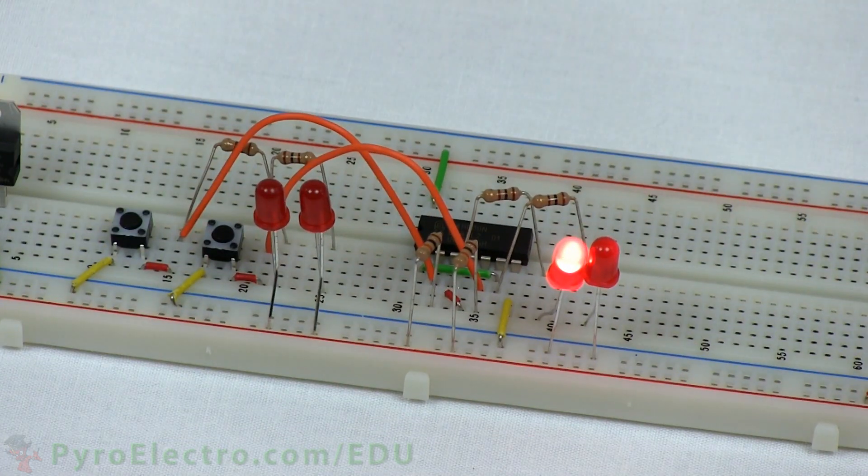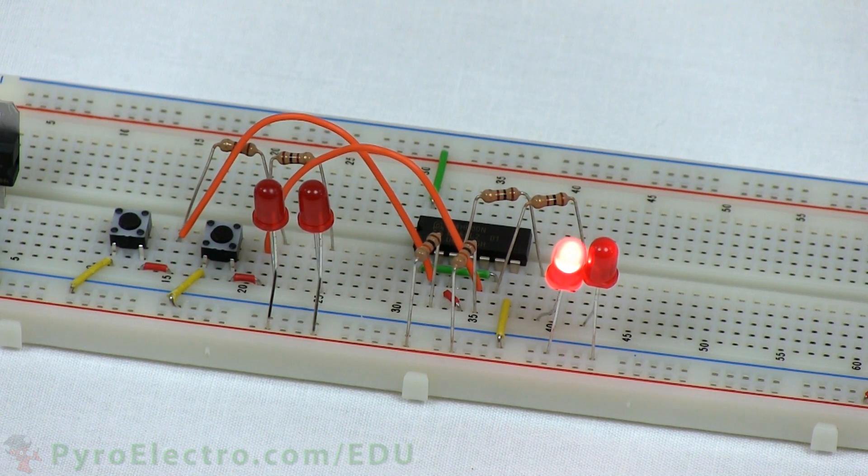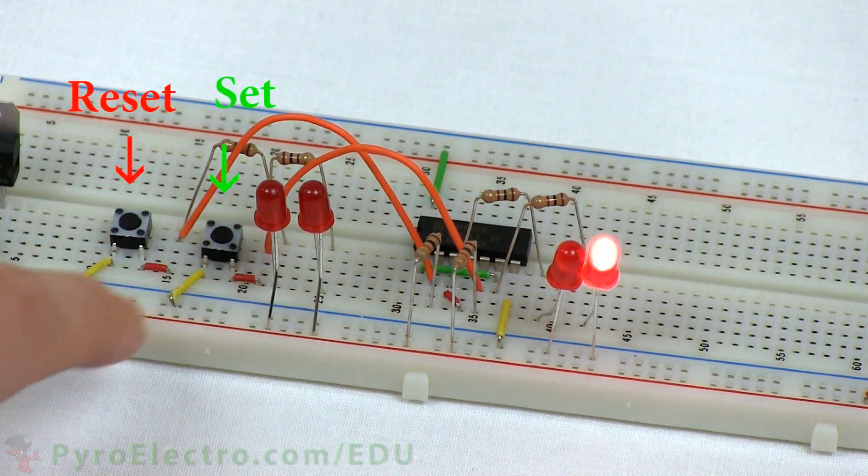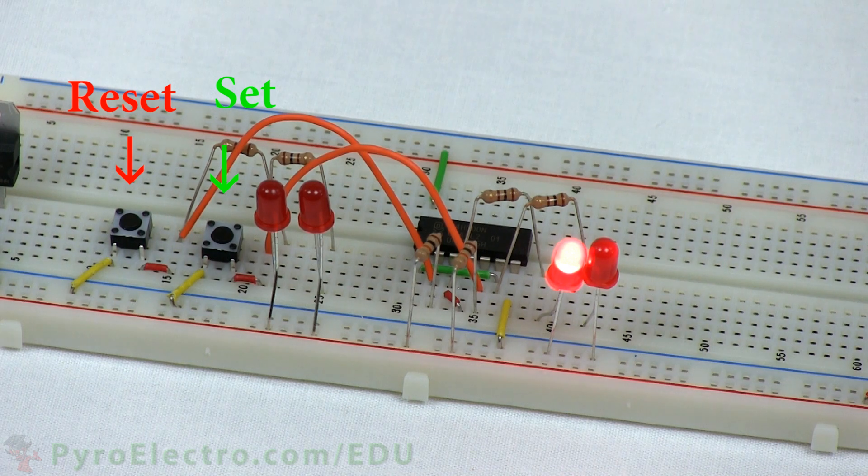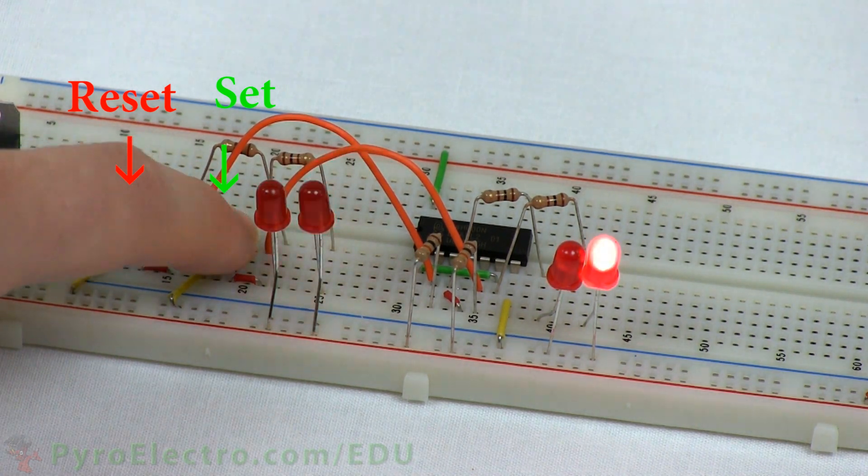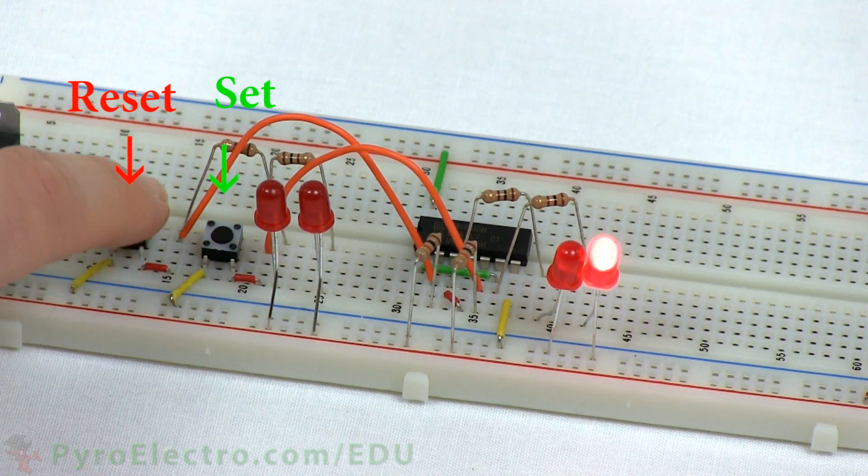When we push the SET button, it sends a logic 0 pulse to the SR latch, setting the output Q to logic 1. Pushing the RESET button does exactly as we expect and resets the state to how it was on power-up.